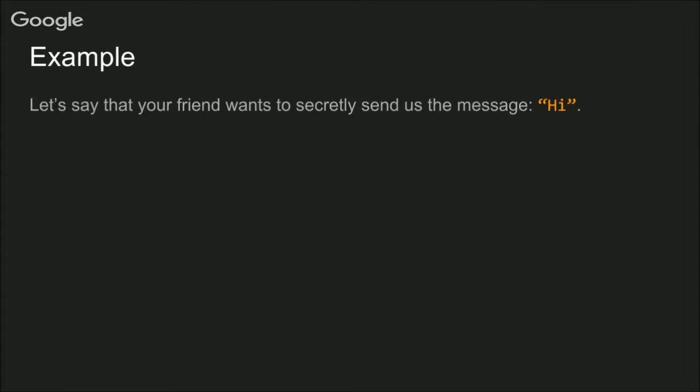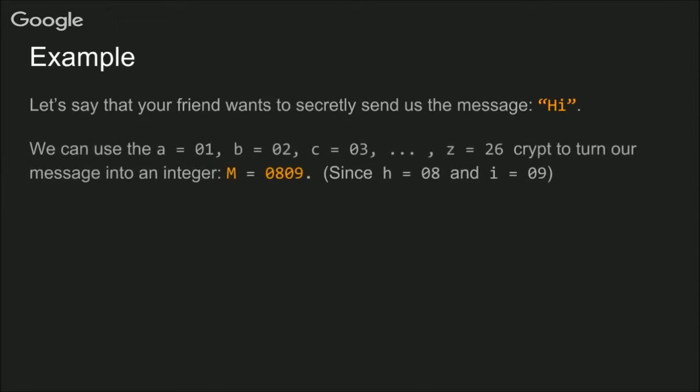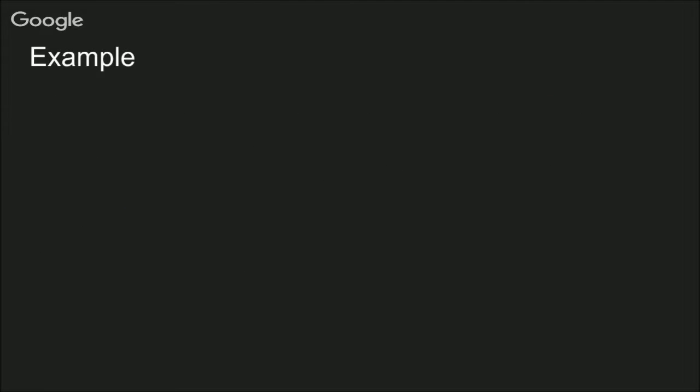Let's say that for some strange reason, your friend wants to secretly send us the message, Hi. Now the first thing we have to do is turn the message into an integer, and we'll use the same letter shift we used before. And the result is that our message is equal to 809. So it's important that M is less than N, because otherwise RSA encryption won't work. So now we can use RSA encryption.